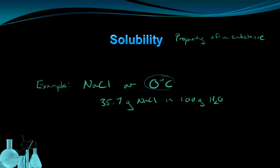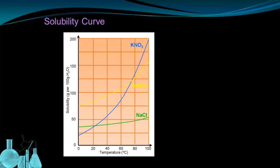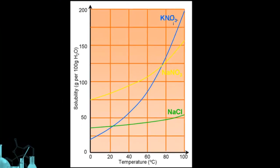Specifying this given temperature is important, because solubility changes with temperature. This change in solubility that occurs with temperature can be modeled with solubility curves. This is a fairly common example of a graph of solubility curves. You'll typically see more than one substance represented at a time. This particular graph shows potassium nitrate (KNO3), sodium nitrate (NaNO3), and sodium chloride — table salt. We're going to pay particular attention to potassium nitrate, just to get a feel for how these solubility curves work.